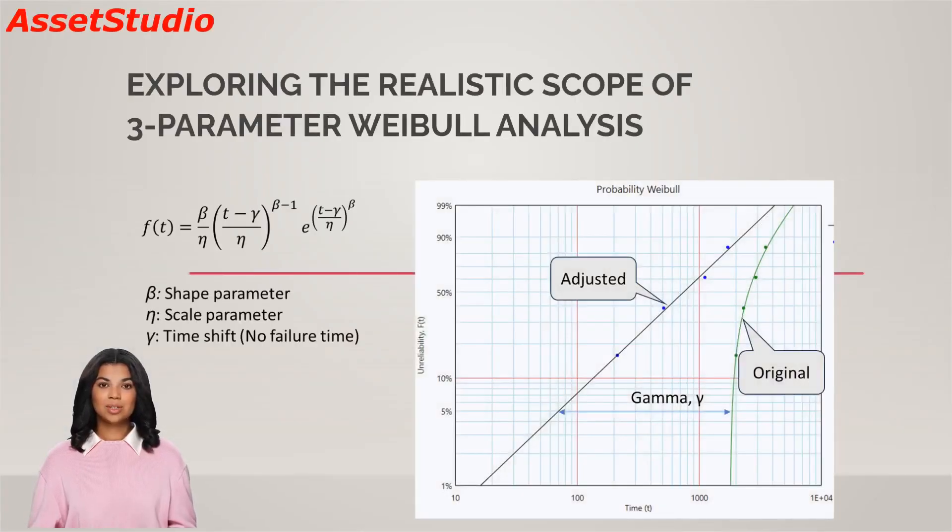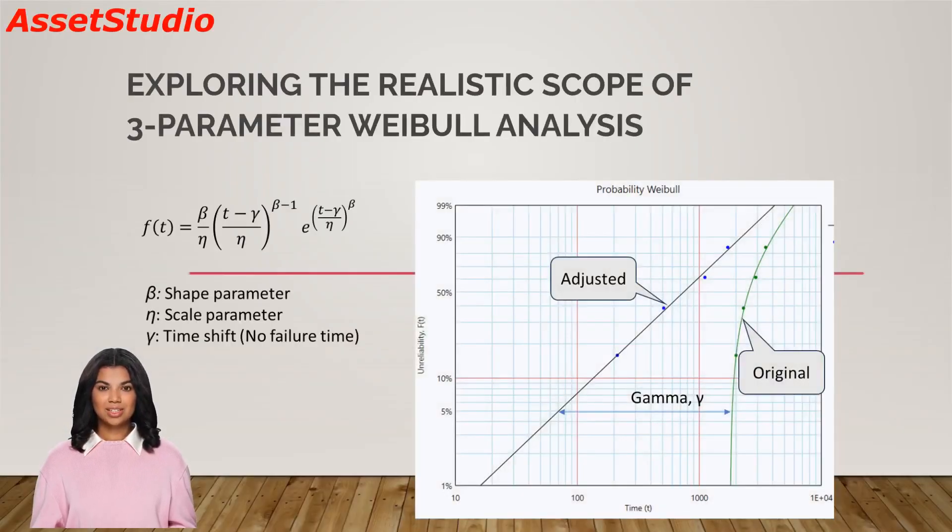In this article, I'll provide a concise explanation of how the gamma value is determined during the fitting of a dataset to a 3-parameter Weibull distribution. This knowledge will empower you to make an informed decision regarding whether to steer clear of this analysis. Additionally, I'll present an illustrative example that showcases a suitable application of the 3-parameter Weibull distribution.